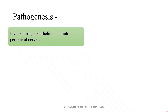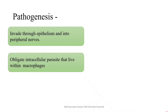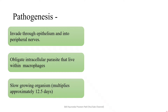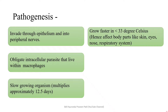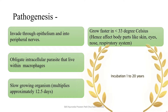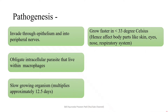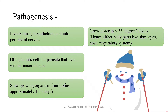Regarding pathogenesis, the organism invades through the epithelium and into the peripheral nerve. Being an obligate intracellular parasite, it requires a living cell for completion of its life cycle and lives within macrophages. It is a slow-growing organism, hence the incubation period is very long — approximately a few weeks to a few years.